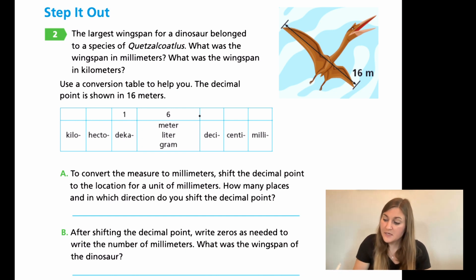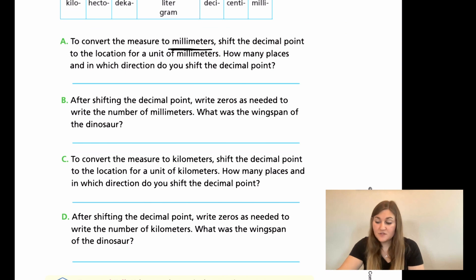Now we have four problems that we're going to be converting. First, we're going to convert the measurement to millimeters. So we're going to shift the decimal point to the location for the unit of millimeters. So we're going to start at the decimal point and we're going to make hops until we get it to the millimeter section. So it says, how many places did you move? How many hops? And in which direction? Left or right? For B, it says after shifting the decimal point, write zeros as needed to write the number of millimeters. So if you have any empty hops, write zeros in them and then write the number that it is now with the unit.